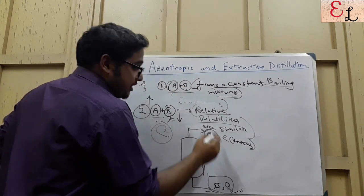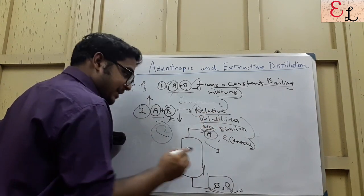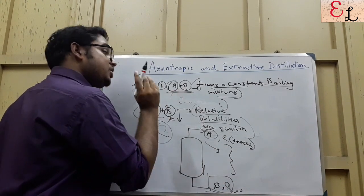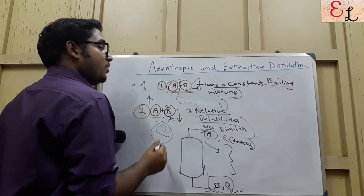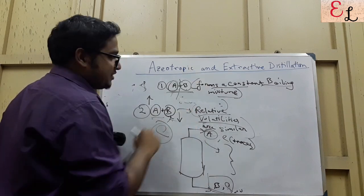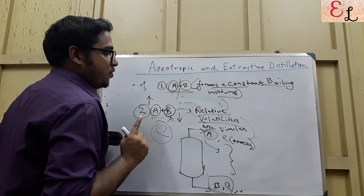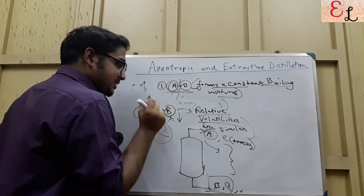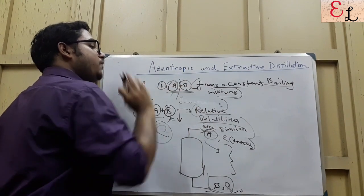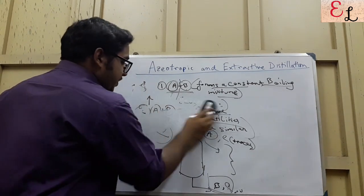Extractive distillation should always be followed when the relative volatilities are similar. It is a much easier technique than azeotropic distillation. But azeotropic distillation has to be used to break azeotropes — to break a constant boiling mixture by forming another azeotrope, though the separation of that new azeotrope becomes difficult. Extractive distillation is preferred wherever it can be applied, but when relative volatilities are different yet a constant boiling mixture still forms, azeotropic distillation must be employed.